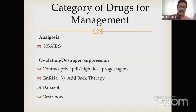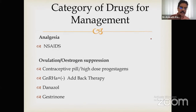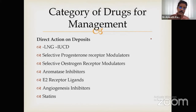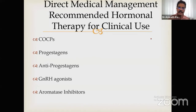Drugs are used for different reasons: some give only analgesia like NSAIDs; others are used to suppress estrogen. The culprit is estrogen. Drugs for estrogen suppression include contraceptive pills, high-dose progestogens, GnRH agonists or antagonists with or without add-back, danazol, and gestrinol — all called ovulation suppression. Drugs with direct action on deposits include LNG-IUS, selective progesterone receptor modulators, selective estrogen receptor modulators, aromatase inhibitors, angiogenesis inhibitors, and statins.